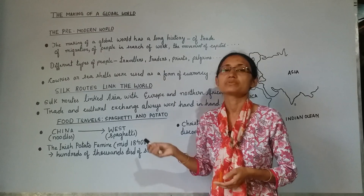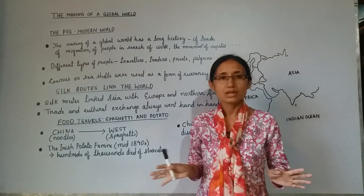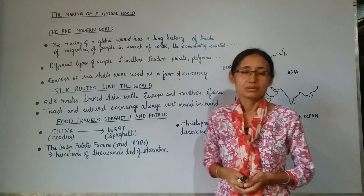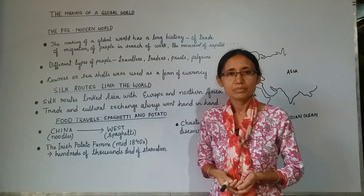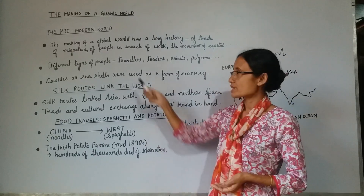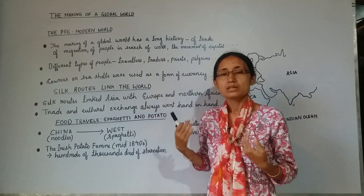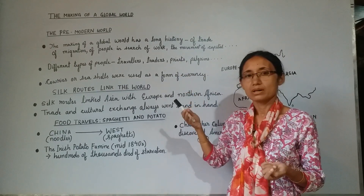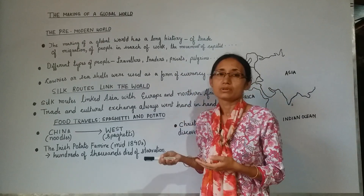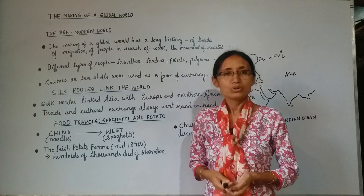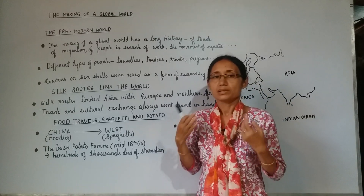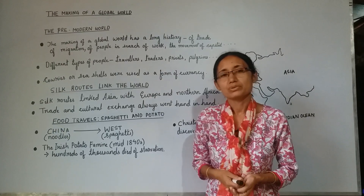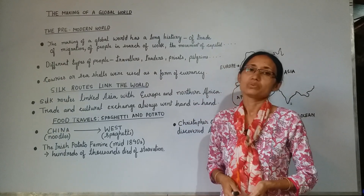Who were the people who moved from one place to another? Various types of people — travelers, traders, priests, and pilgrims. Why would they move from one place to another? For various purposes: for trading purposes, or for gaining spiritual fulfillment or higher enlightenment. When they moved from one place to another, along with them they carried their skills, their knowledge, their traditions and cultures. Sometimes they also carried diseases along with their bodies.